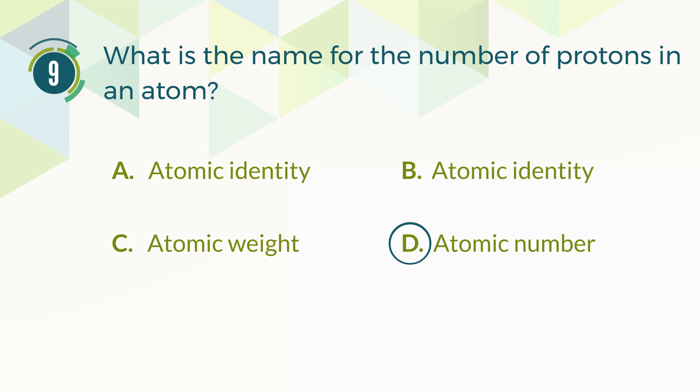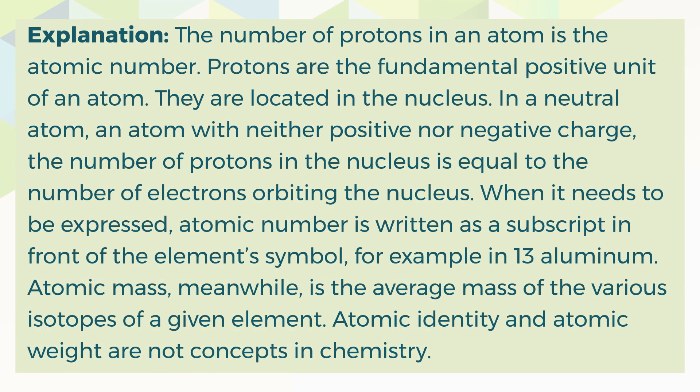The correct answer is D, atomic number. The number of protons in an atom is the atomic number. Protons are the fundamental positive unit of an atom, located in the nucleus. In a neutral atom — one with neither positive nor negative charge — the number of protons in the nucleus is equal to the number of electrons orbiting the nucleus. Atomic number is written as a subscript in front of the element's symbol, for example 13 for aluminum. Atomic mass, meanwhile, is the average mass of the various isotopes of a given element. Atomic identity and atomic weight are not concepts in chemistry.